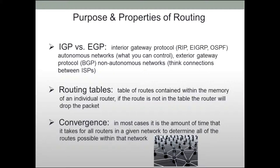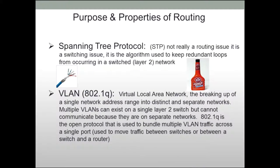So what are routing tables? They're just the routes to other networks that a router knows about — kept in a table so the router can work fast. Convergence, in networking, is the amount of time it takes for all routers in a given network to determine all possible routes and reach a stable state. Convergence matters a lot: the faster the convergence, the happier your end users will be. There's nothing worse than taking a router down, bringing it back up, and having it be slow to converge — the phones start ringing.